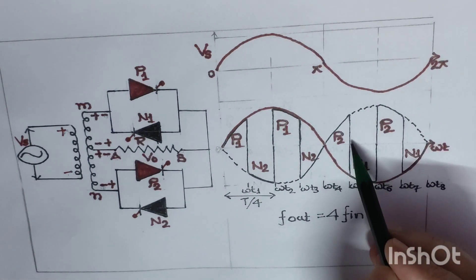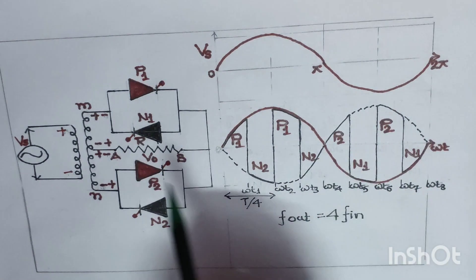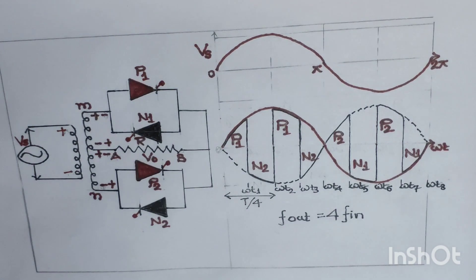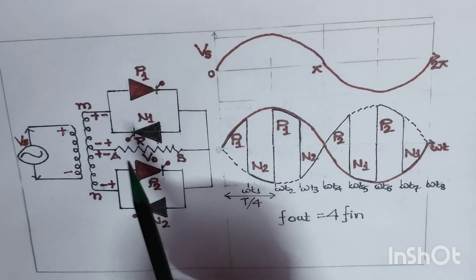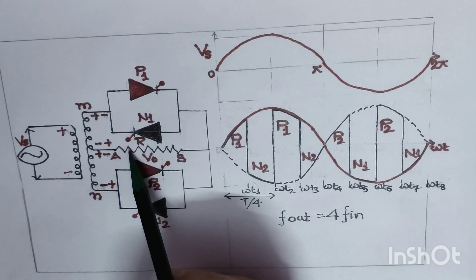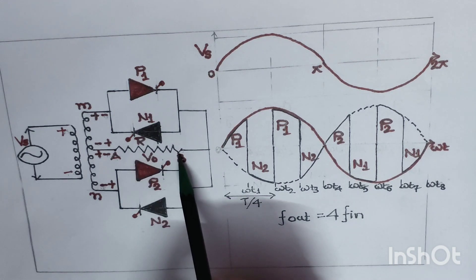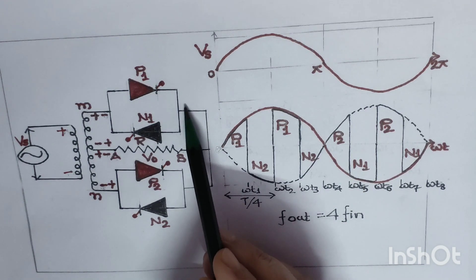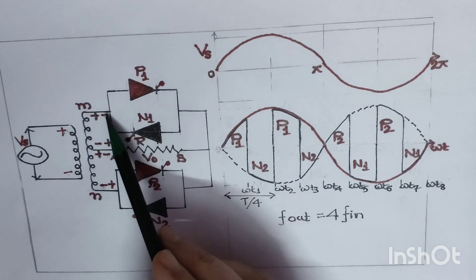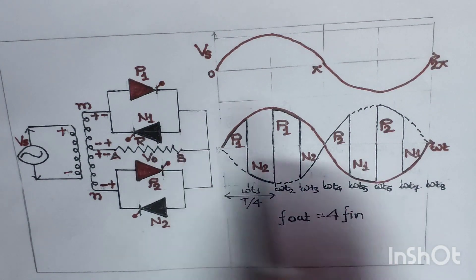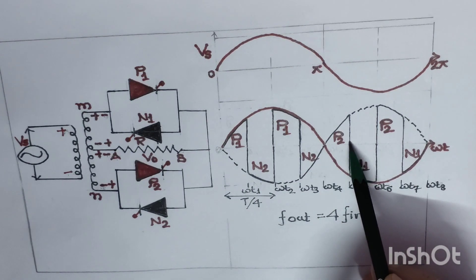At ωt5, we switch off thyristor P2 by force commutation and supply a trigger pulse to thyristor N1. Once triggered, the positive polarity drives current from the terminal to point A, from A to B through resistance R, back through N1 to the negative. This gives a negative polarity output, which is traced accordingly until we reach angle ωt6.